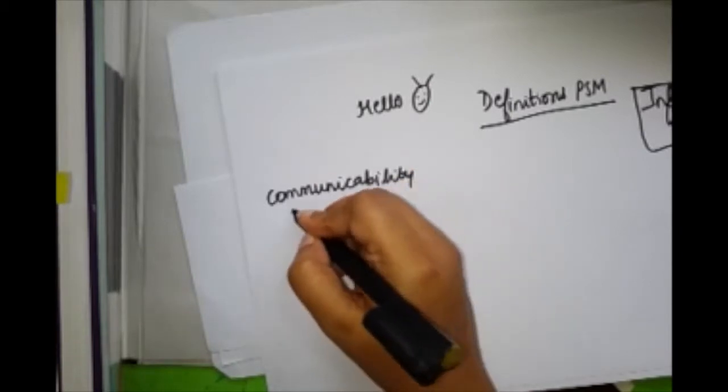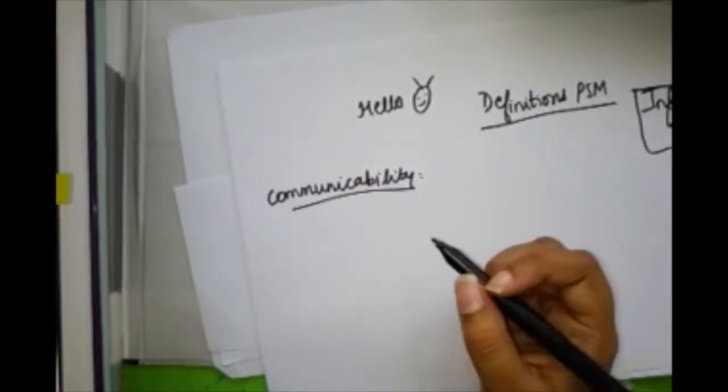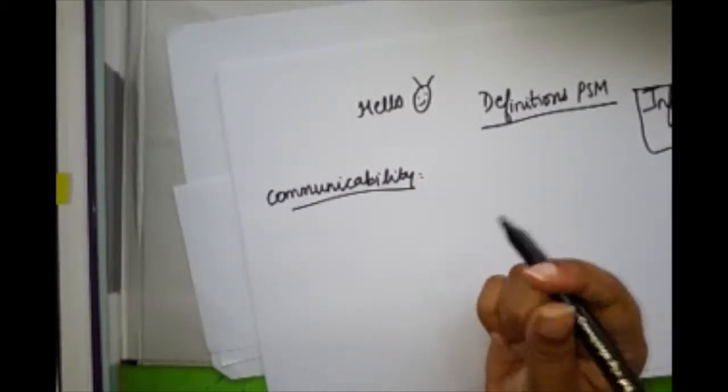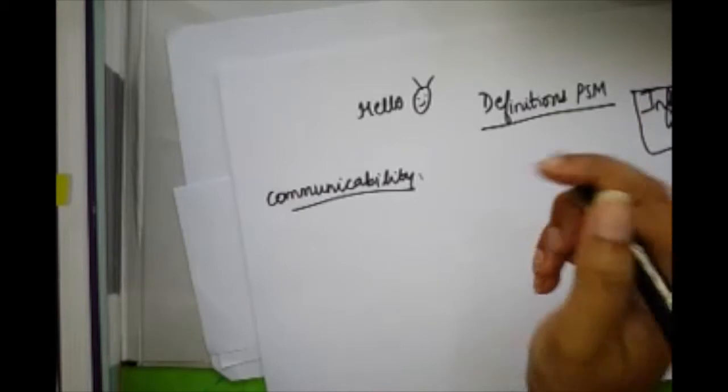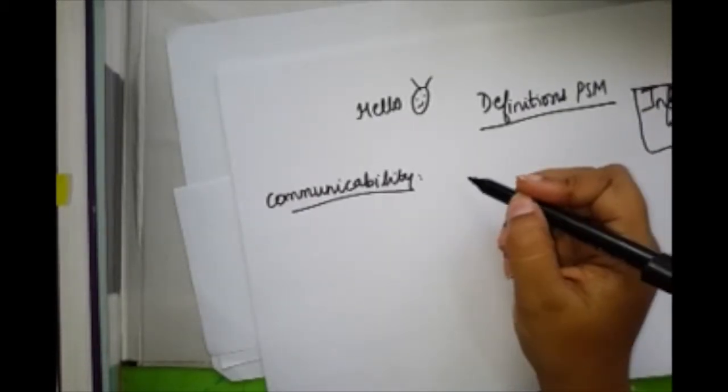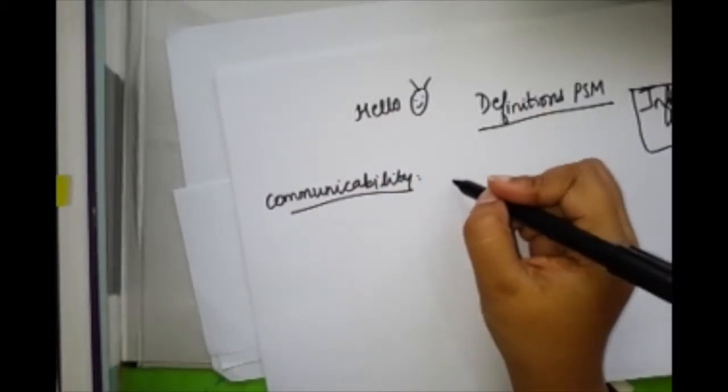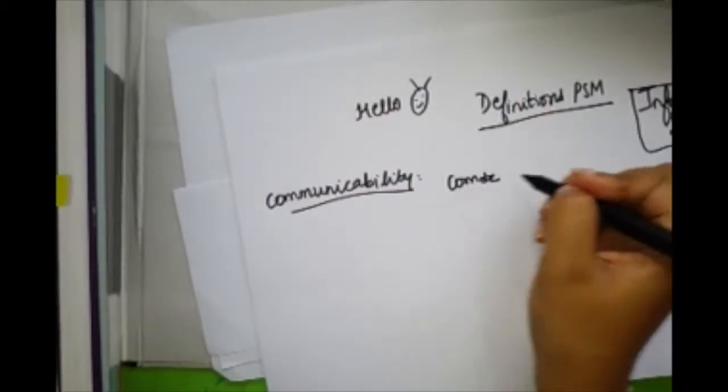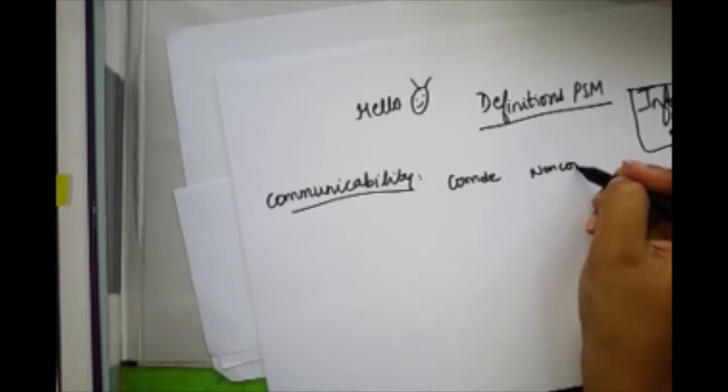The textbook definition says communicability is the ability of the disease agent to be transmitted from an infective to a susceptive host, either directly or indirectly. But how do we make sure we don't get confused? Let's take a simple example. In any textbook, you have two sections: communicable disease and non-communicable disease.